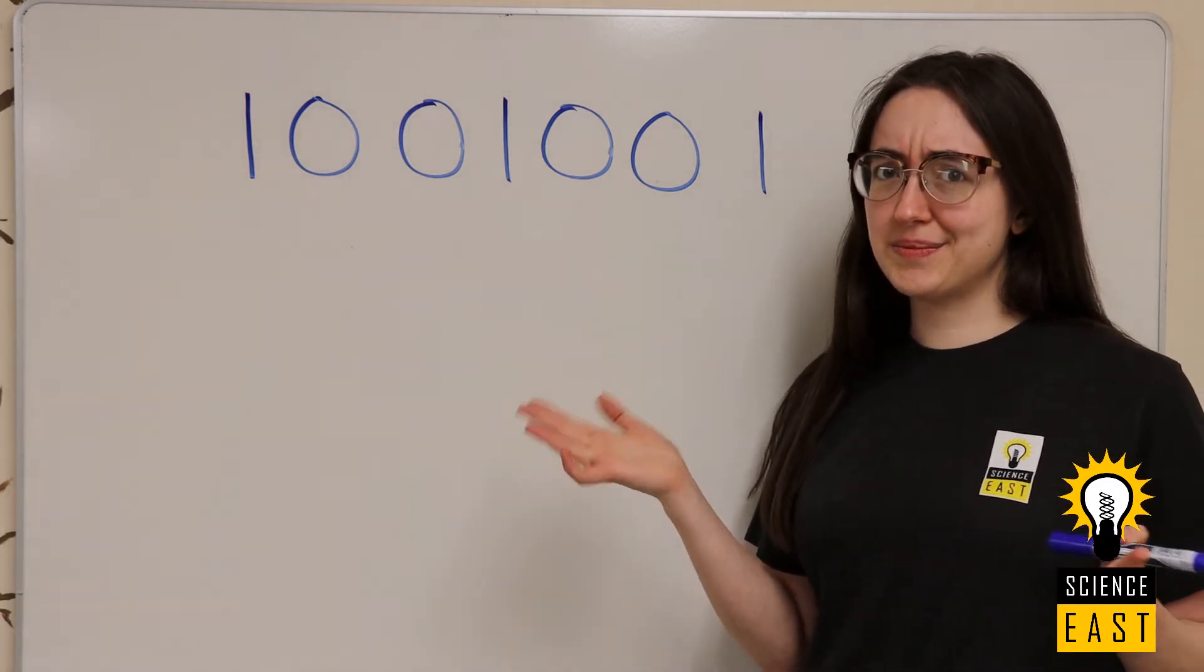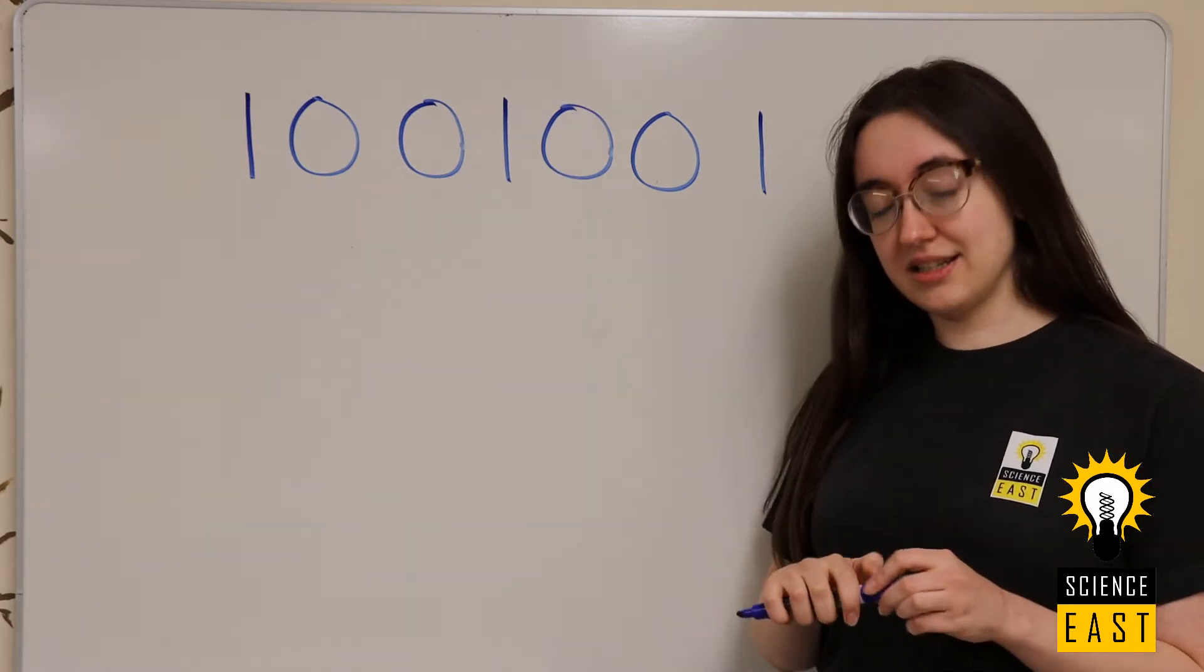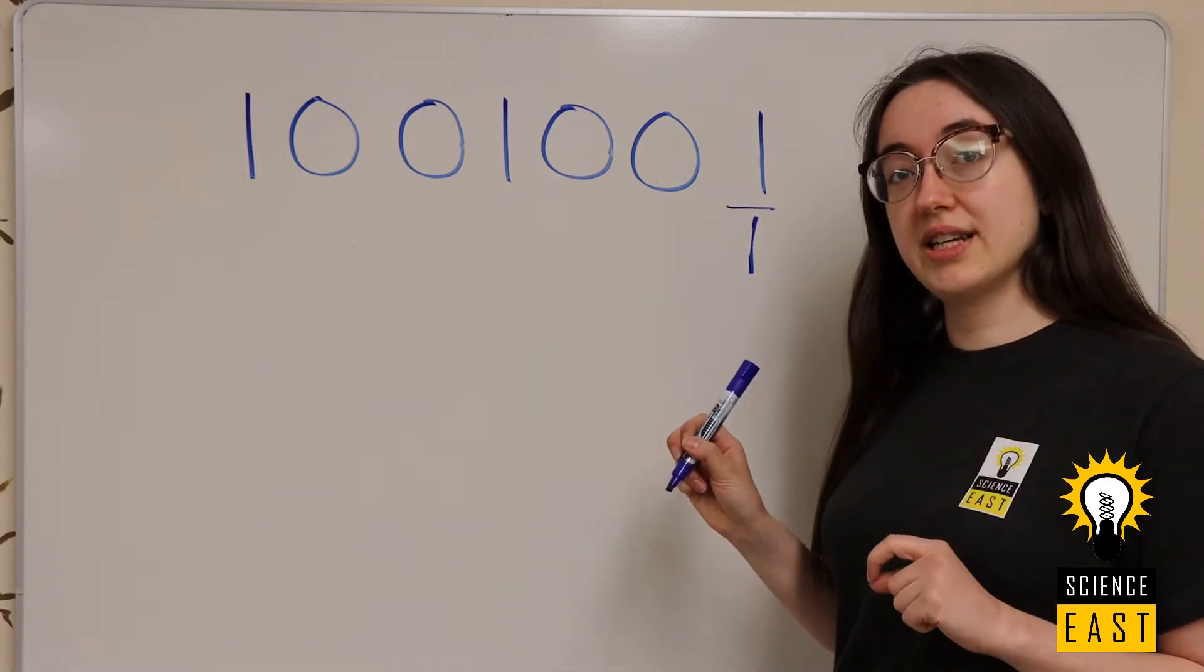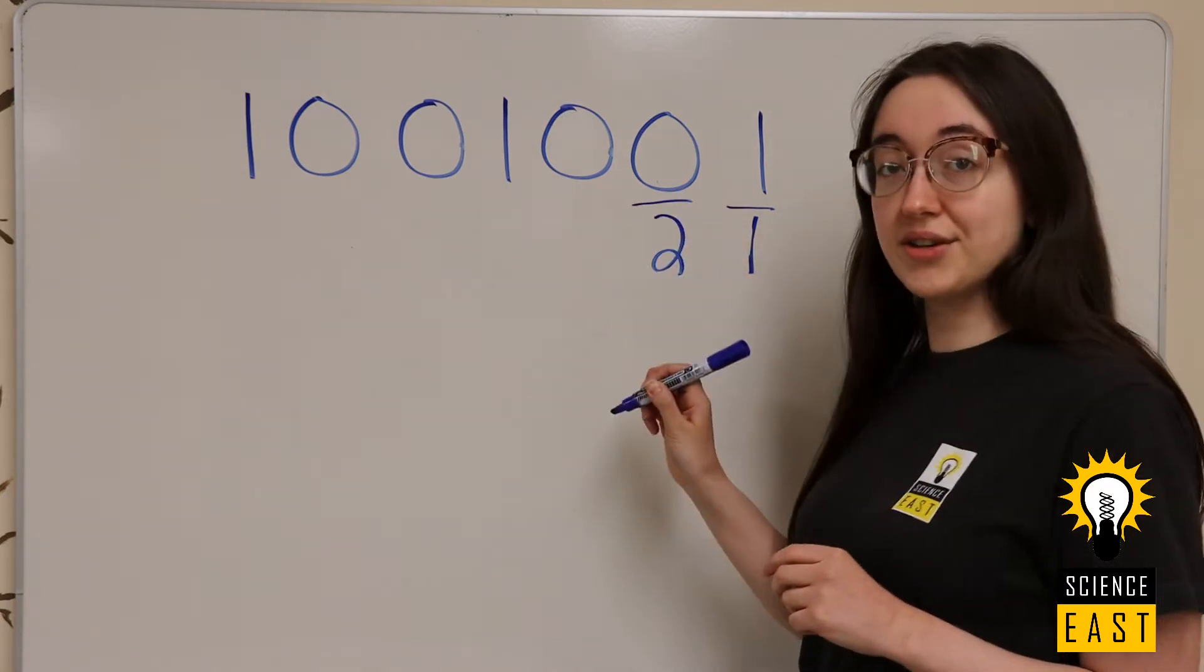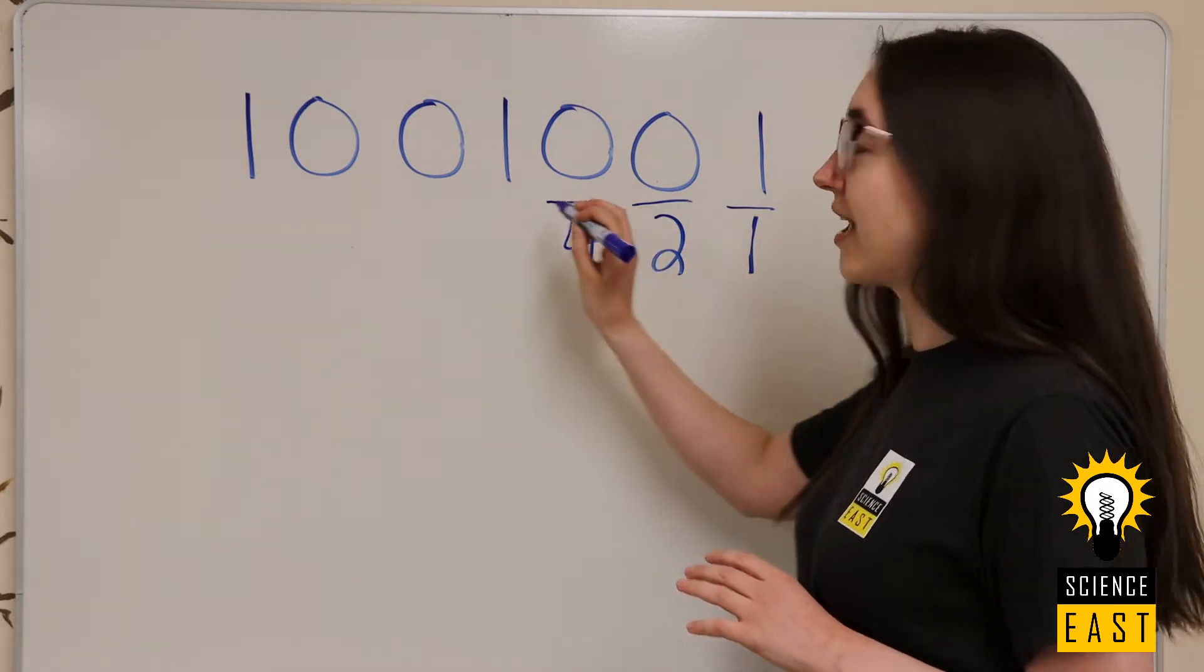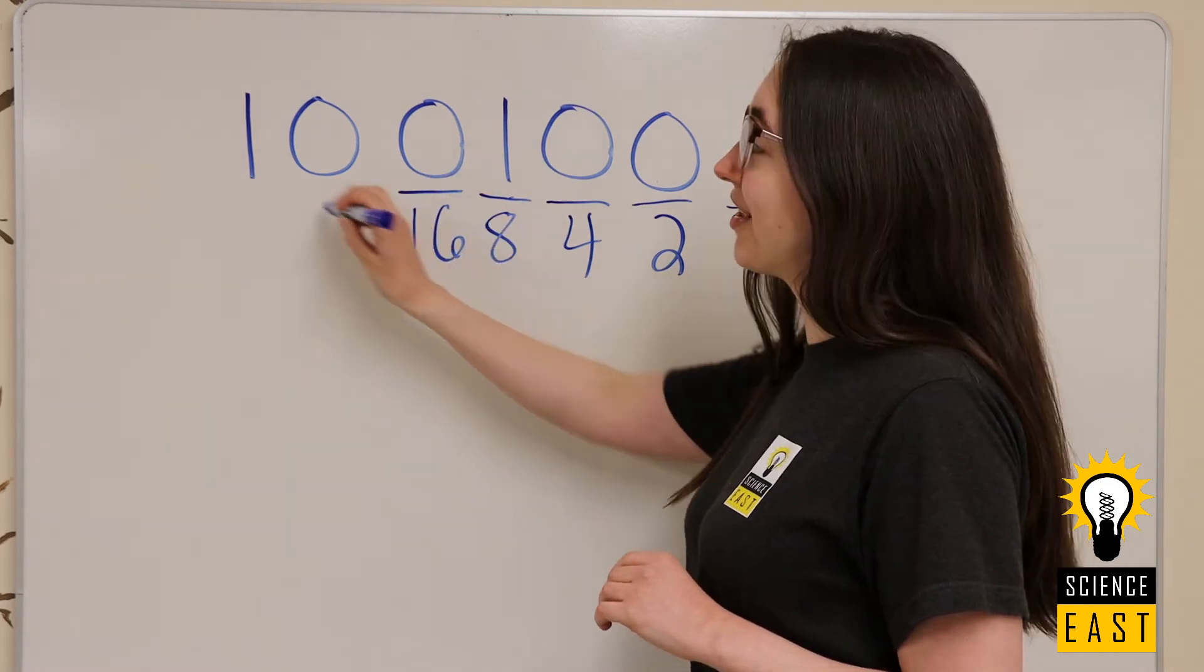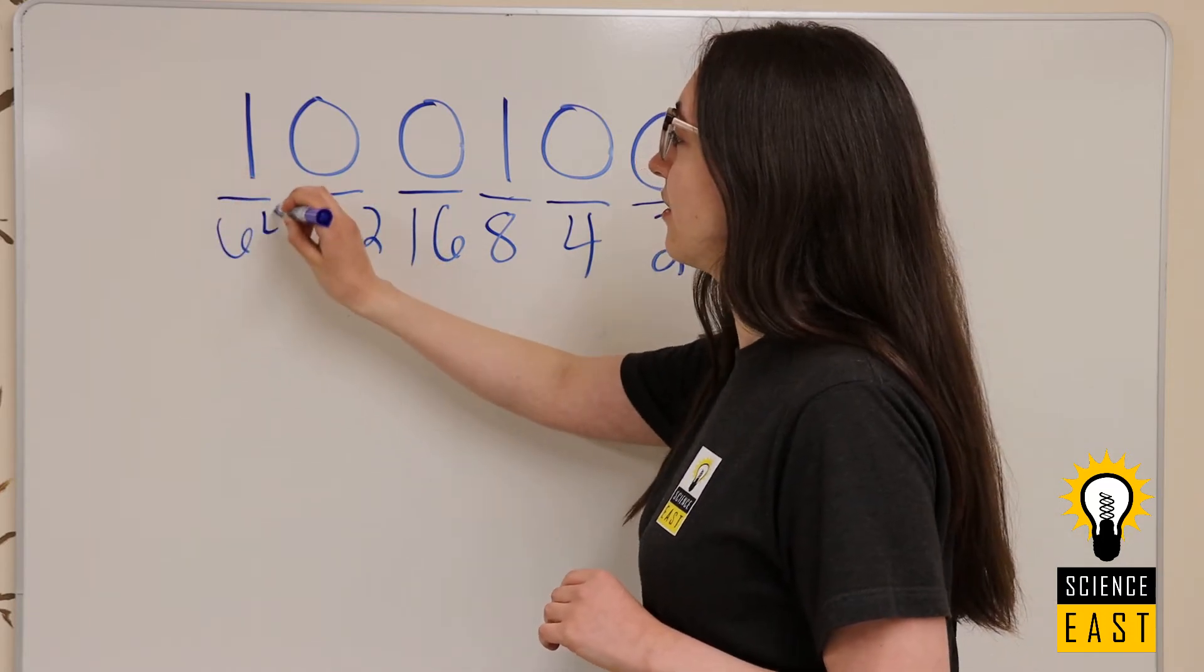What are those values? Well, we can read it from right to left. On the right side, the first value is 1. The second digit represents the value 2. The third digit represents the value 4, 8, 16, 32, and 64.